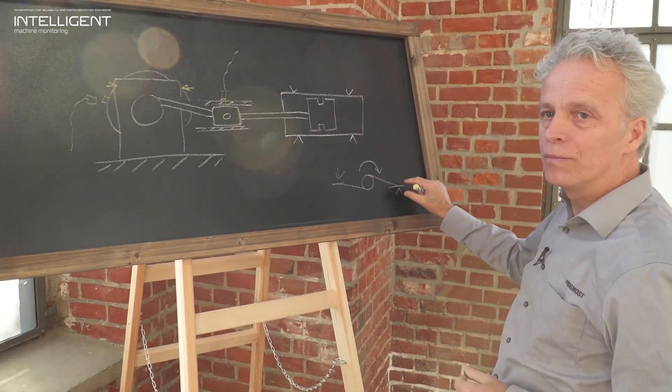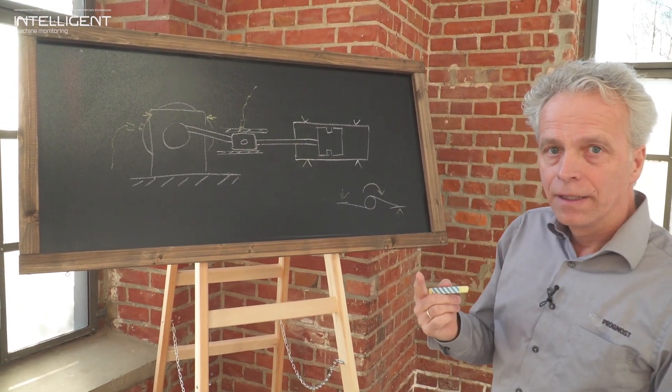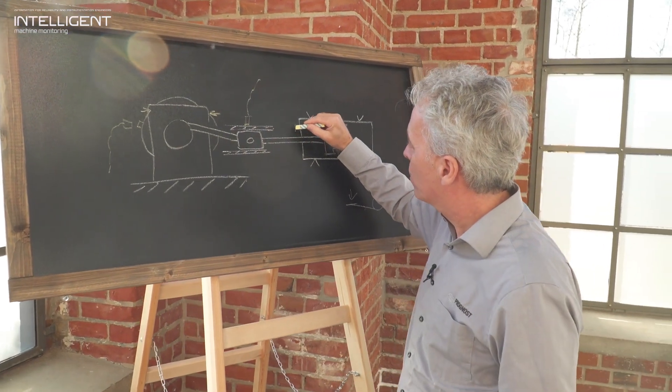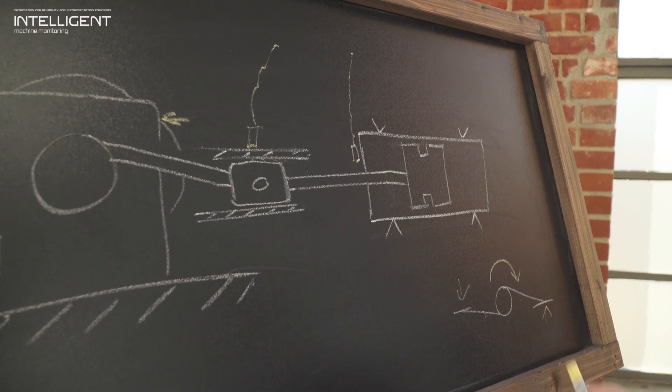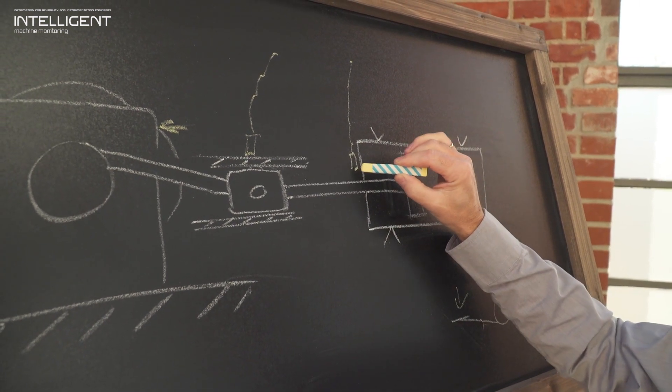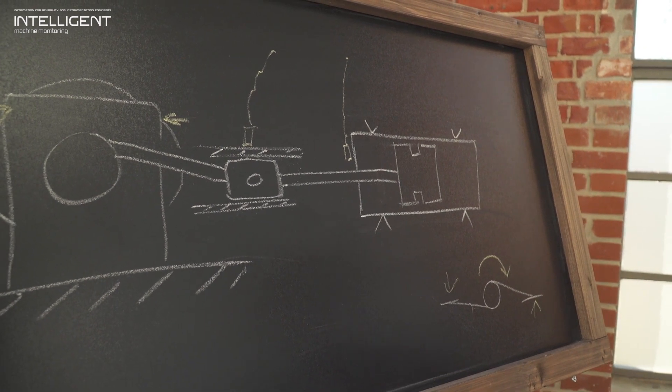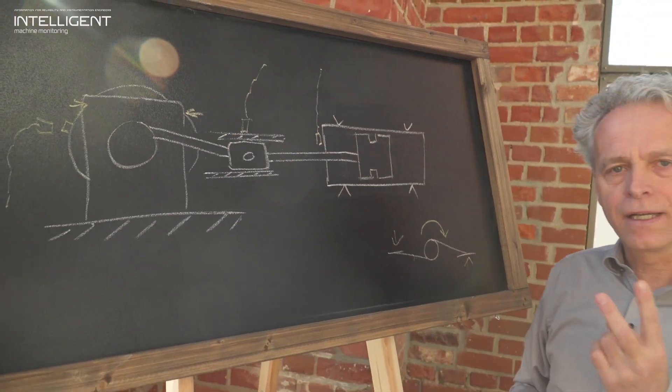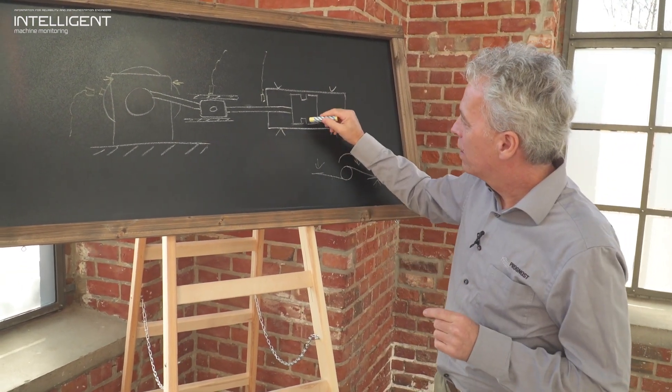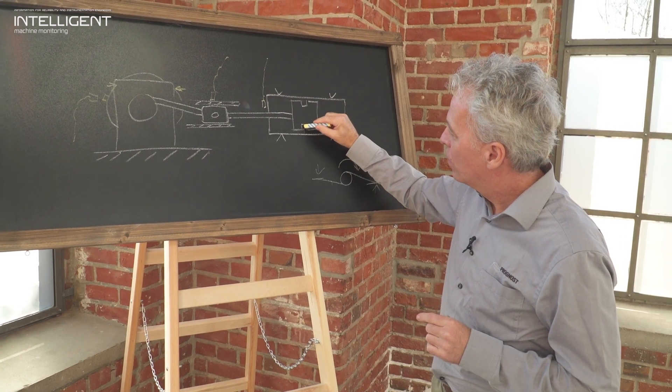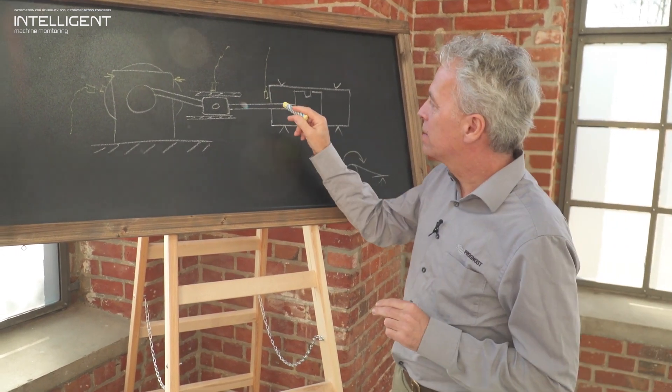At the packing we install a proximity sensor. This proximity sensor measures the distance between the sensor tip and the piston rod, and usually two different analyses are carried out based on the signal. One is the wear of the rider bands, number two is related to the machine protection.